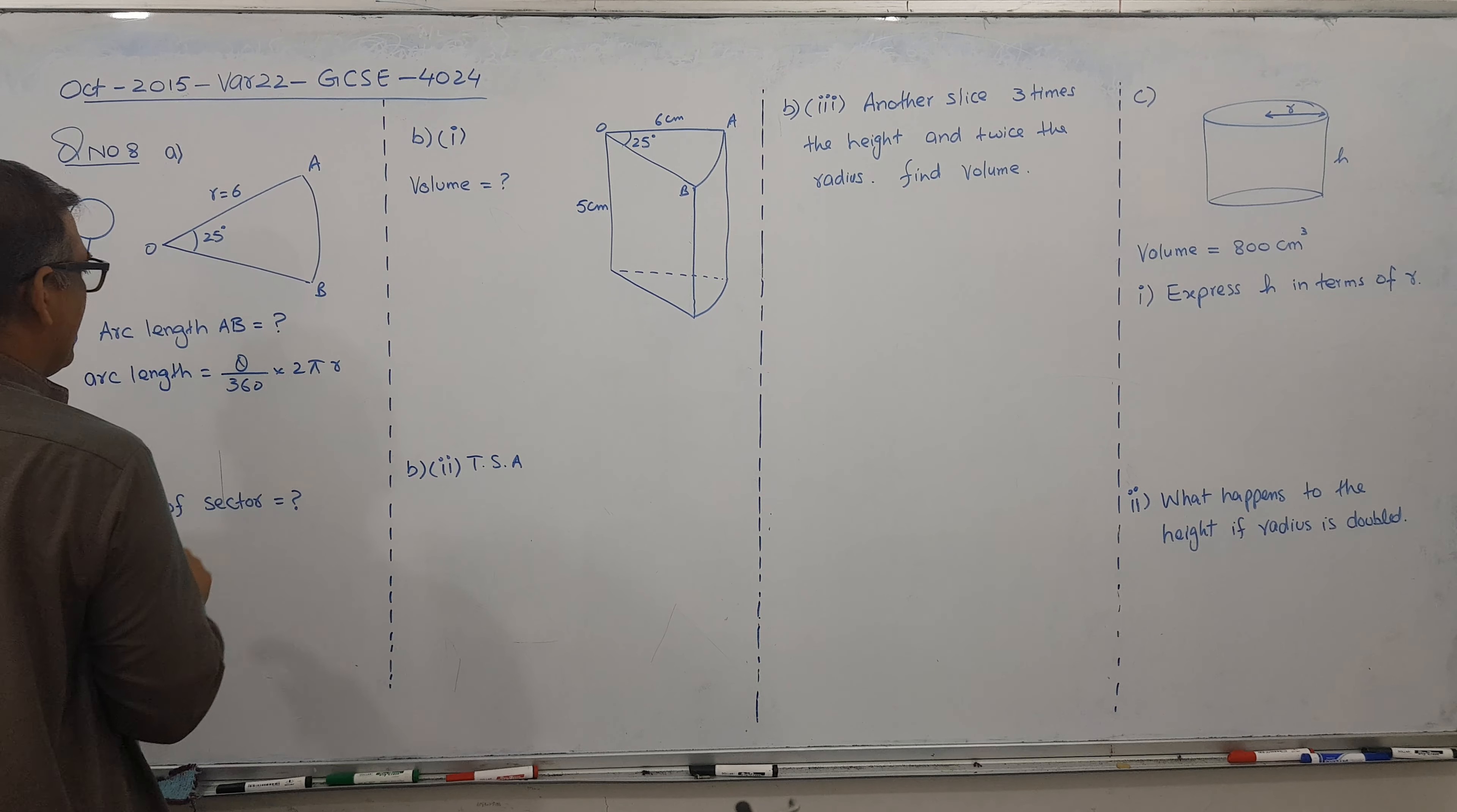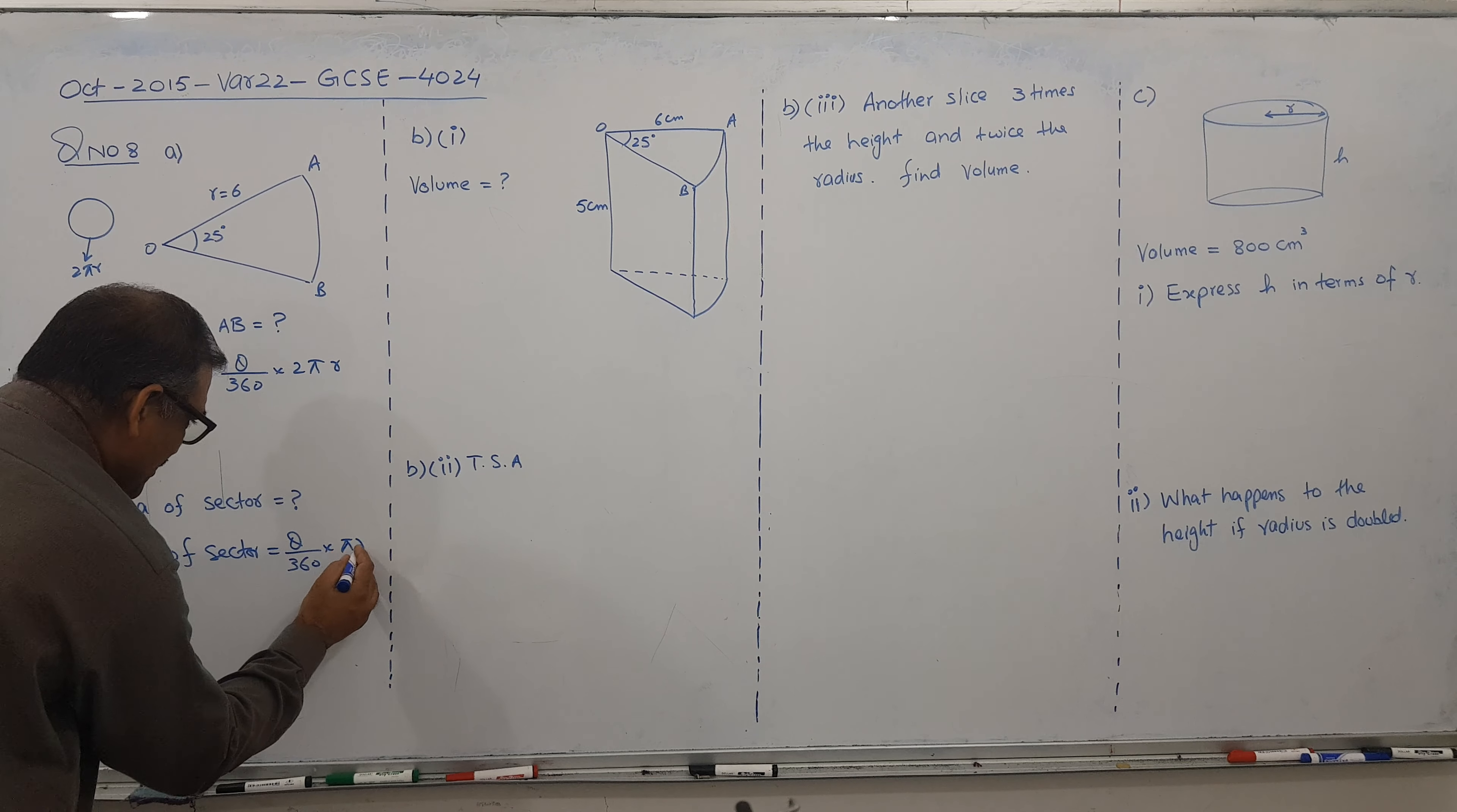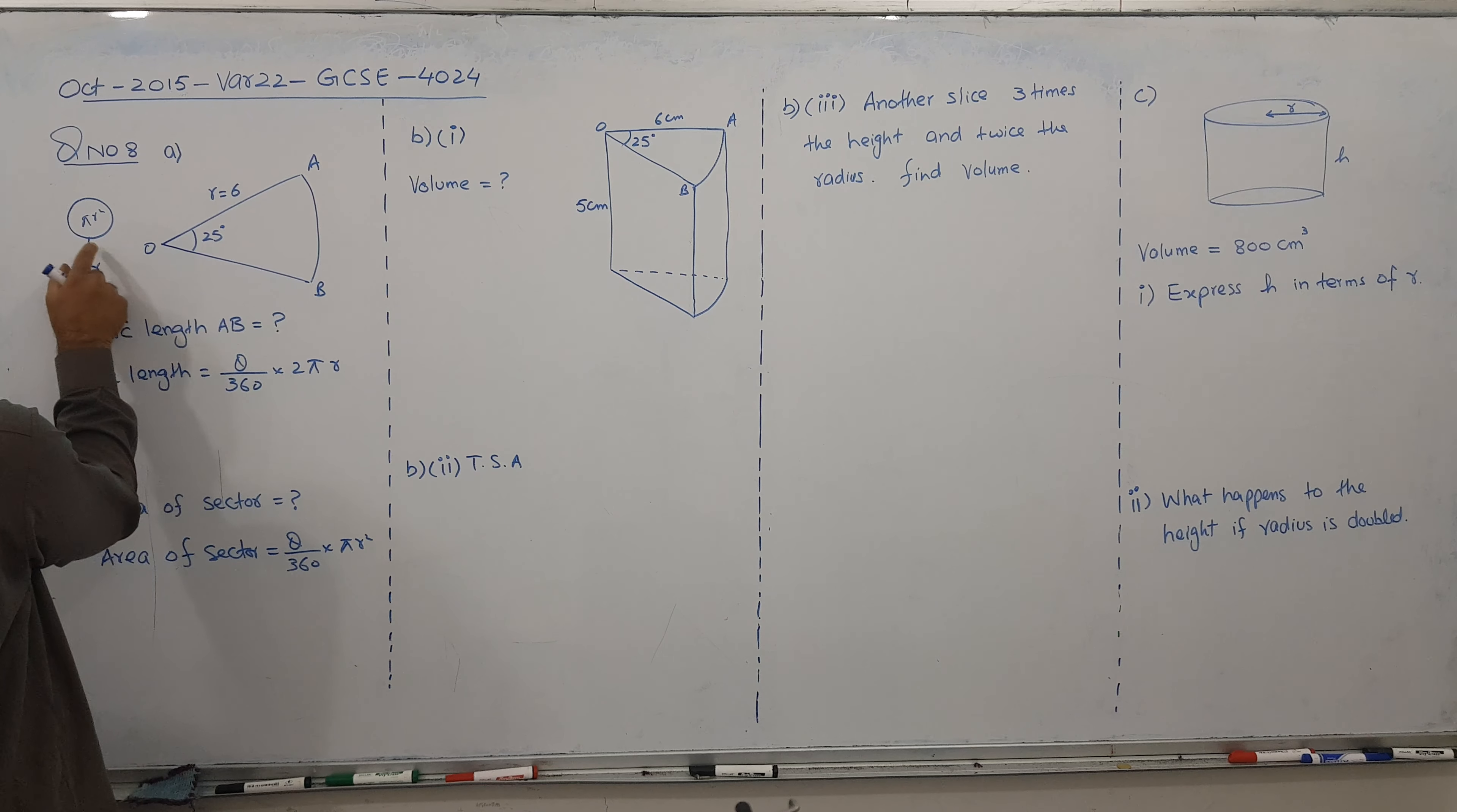So 2 pi r came here. And for the area of sector, so area of sector formula is theta by 360 into pi r squared. Because the inner part is area, the inner part. So inner part area, area concern pi r squared and arc length concern 2 pi r.